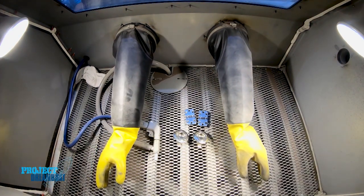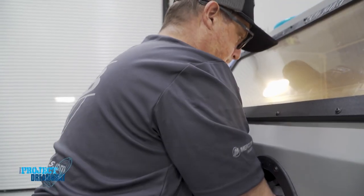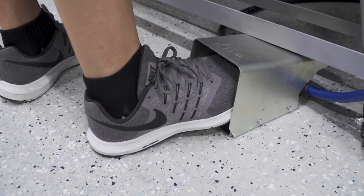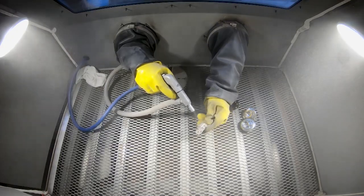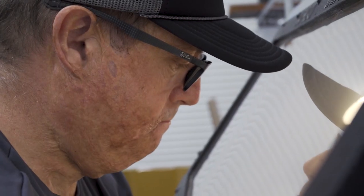Inside the sandblast cabinet, we have aluminum oxide set to a specific grit to get the type of finish that we need. Sandblasting is really important because this is going to give a key for the Cerakote to stick to.